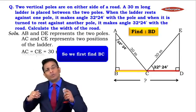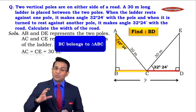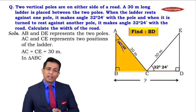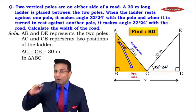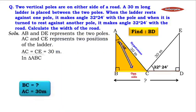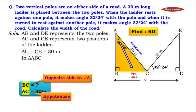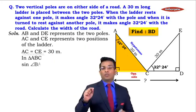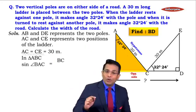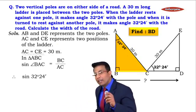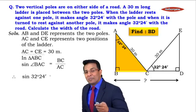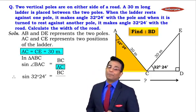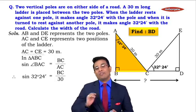To find BC, consider right angle triangle ABC. For the acute angle at A, BC is the opposite side and AC is the hypotenuse. Since we're working with opposite side and hypotenuse, we use sine. So: sin(angle BAC) = BC / AC, which gives sin(32° 24') = BC / 30.